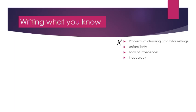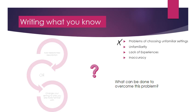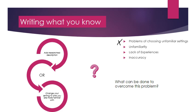There are two things you can do to overcome this problem. If you're really intent on writing about New York, the Western Front, or wherever it might be, you need to research and find out what those places are or were like, so you can write accurately. The easier thing to do is simply change your setting to one you're familiar with — one you can actually remember rather than have to create from scratch.